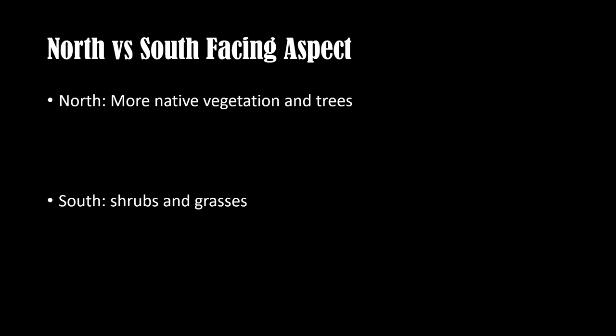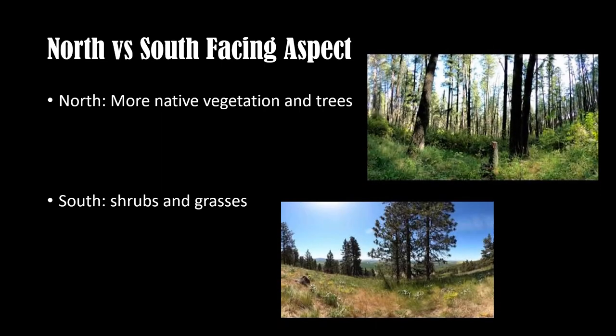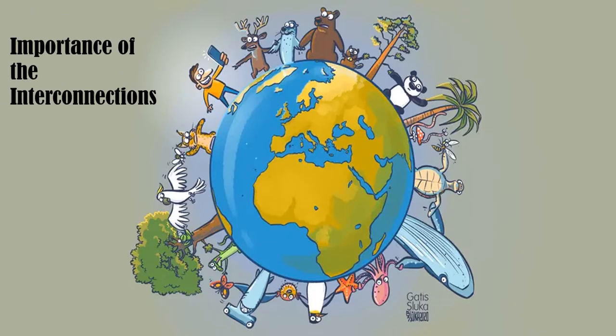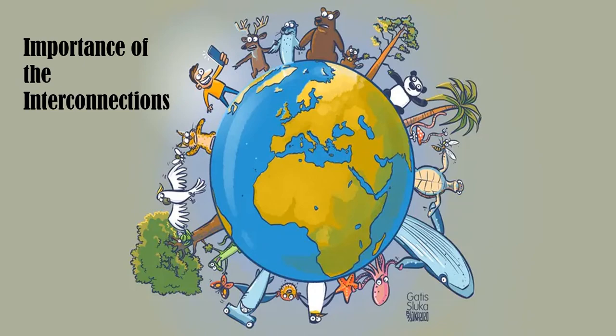When arriving at Kamiak Butte, you will notice the beautiful ponderosa pine, Douglas fir, and western larch trees, as well as many shrubs and grasses that live abundantly all across the butte. There is a blatant difference in the habitats of the north and south-facing aspects — the north-facing aspect has more native vegetation and trees, whereas the south-facing aspect has more shrubs and grasses. The interactions between each ecosystem show how living organisms working together ensure abundance as a team effort.